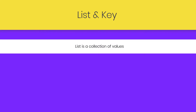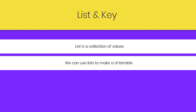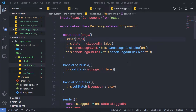Let's take a look at how to use React lists and keys in a React component. A list is a collection of values — it may be numbers, strings, null values, or any valid data type. You can use a list to make the UI iterable. In this lecture, I'm going to show you how to use list and keys in a React component and how to make your UI iterable, starting with a simple example.